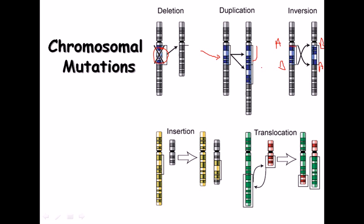In insertion, unlike duplication (where the duplicated region was already present on the same chromosome), a stretch of chromosomal region is cut from one chromosome and inserted into another. For example, a segment from a yellow chromosome is cut and attached to a blue chromosome, decreasing the yellow chromosome's length and increasing the blue chromosome's length.